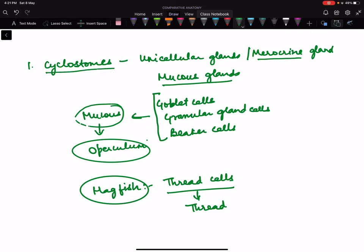So this was all about cyclostomes. In cyclostomes, there is no multicellular gland in the skin, only unicellular glands.